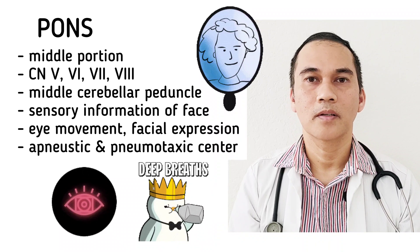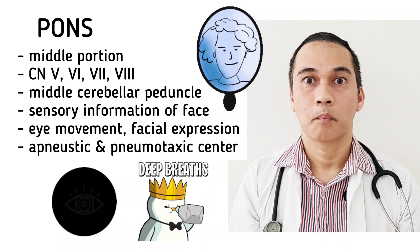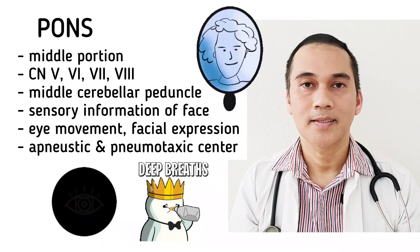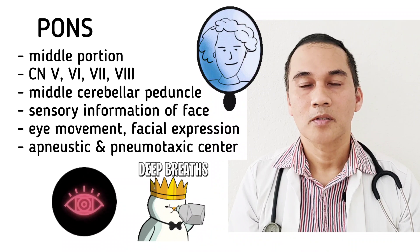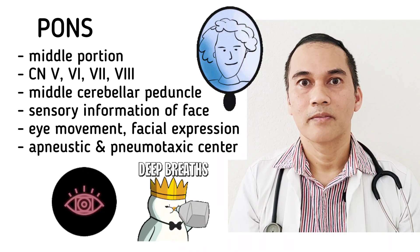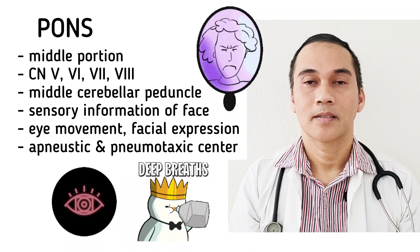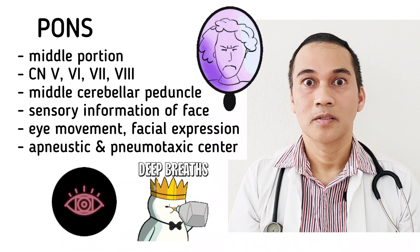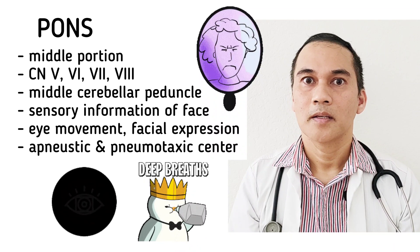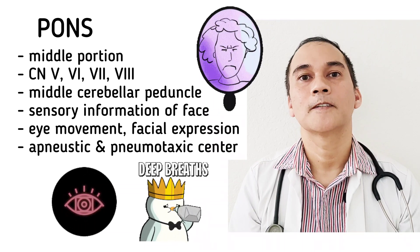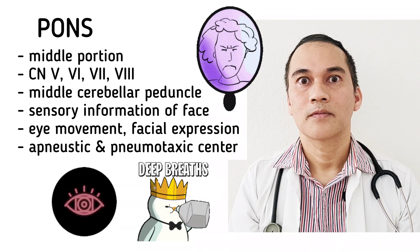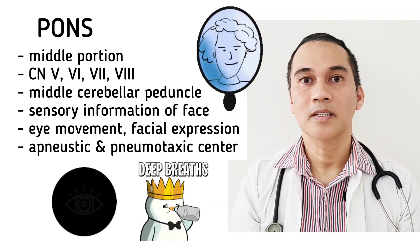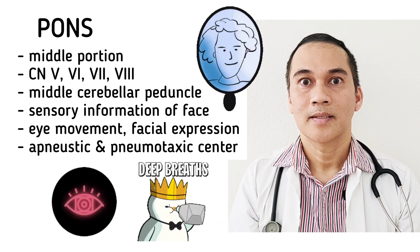The pons is the middle part of the brainstem, and four cranial nerves originate from the pons: cranial nerve 5, the trigeminal; number 6, the abducens; 7, the facial; and 8, the vestibulocochlear. The pons is connected to the cerebellum via the middle cerebellar peduncle. Based on those cranial nerves, basic functions of the pons include carrying sensation to and from the face, eye movement, chewing, facial expression, tongue sensation, and facial sensation. The pons is also responsible for the pneumotaxic and apneustic breathing centers, which control the rate and depth of breathing.